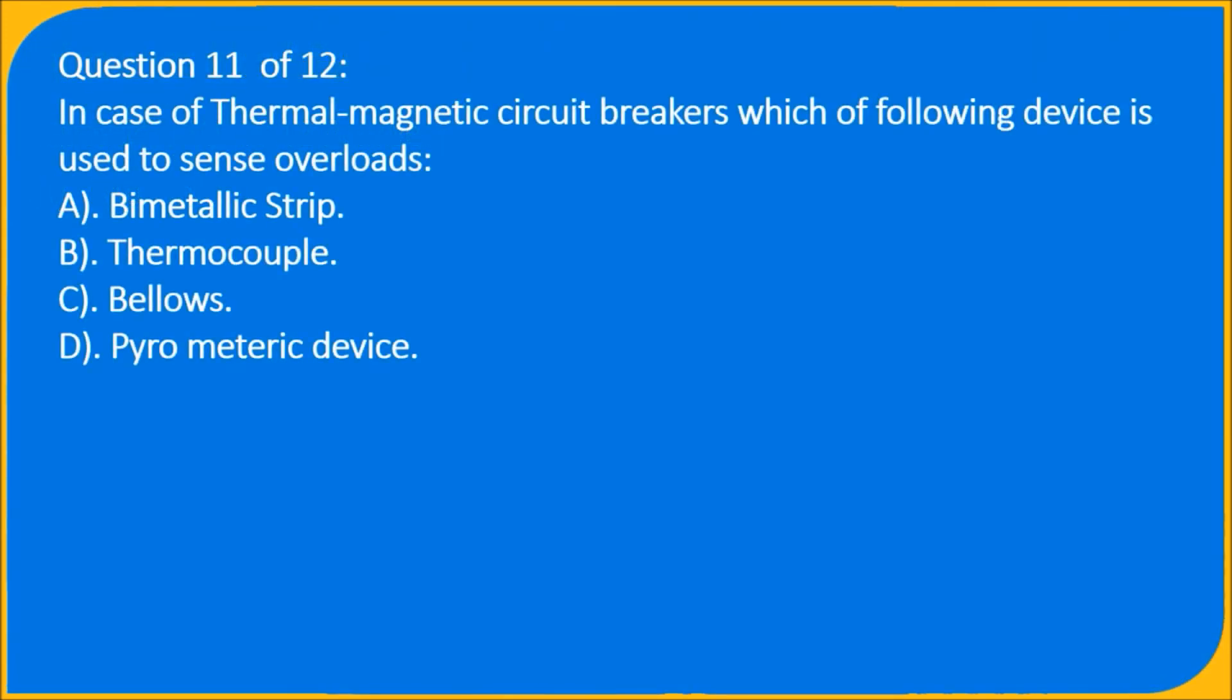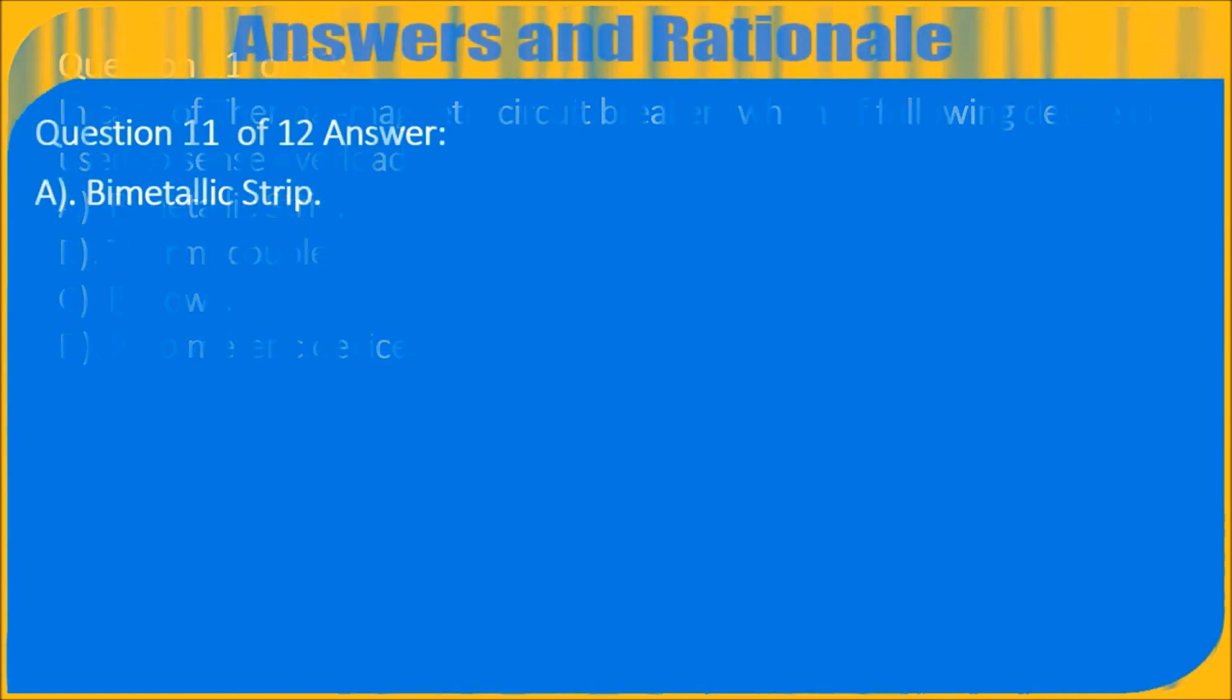Question 11 of 12: In case of thermomagnetic circuit breakers, which of the following device is used to sense overloads? A) Bimetallic strip, B) Thermocouple, C) Bellows, D) Pyrometric device. Question 11 of 12 answer: A) Bimetallic strip.